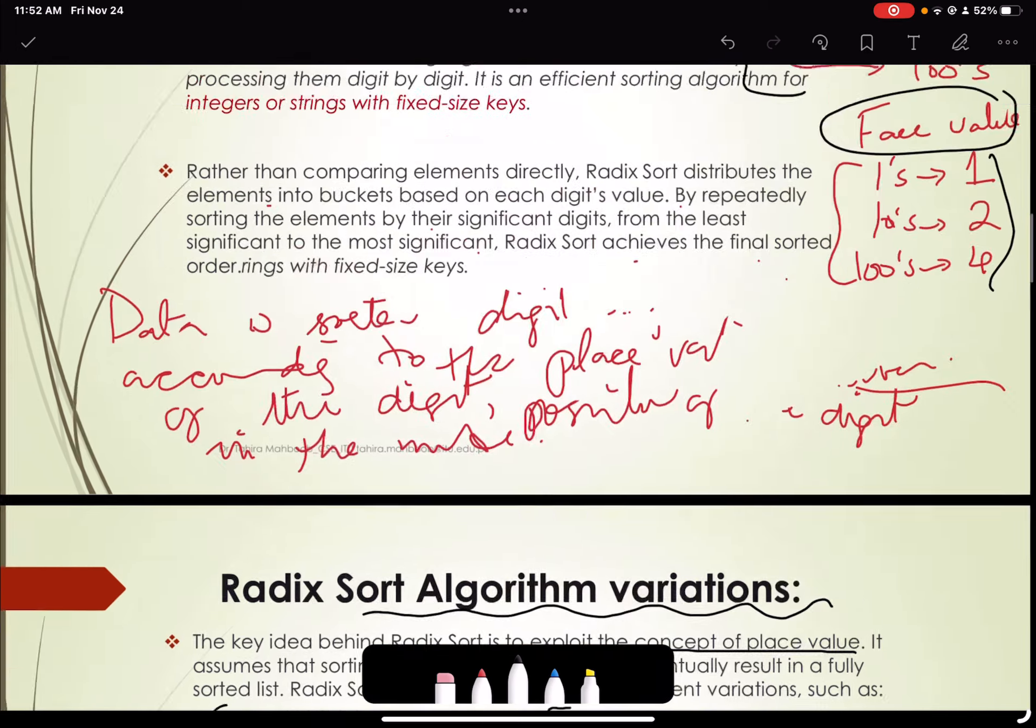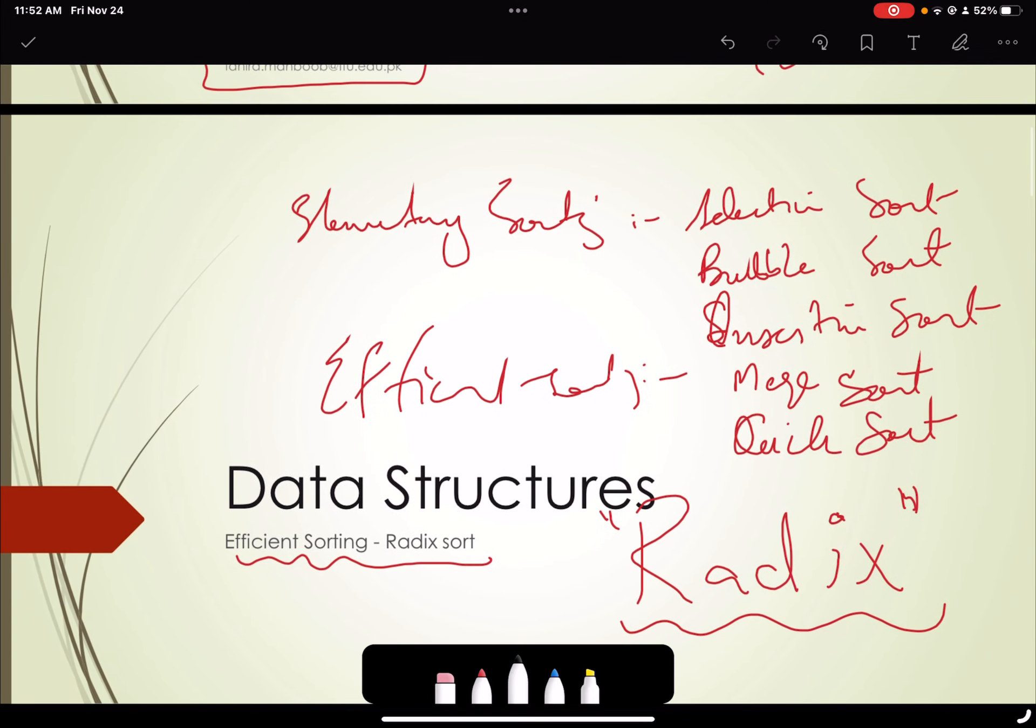So the previous techniques that we have studied so far, the selection sort, bubble, and insertion sort, they have a complexity of O(n squared), quadratic complexity, time complexity. And the merge sort has complexity of n log of n, these two efficient sorting techniques.